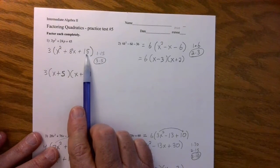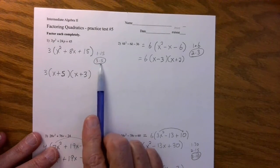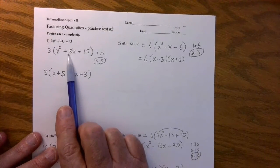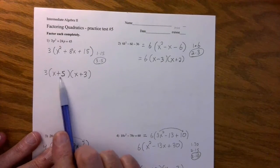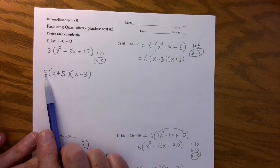We know how to factor that one the regular way. Factor the fifteen. One and fifteen, three and five. Two numbers added together is eight. And then go ahead and use three and five. Don't forget to put the three in front.